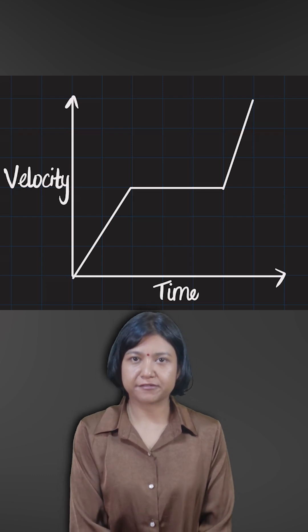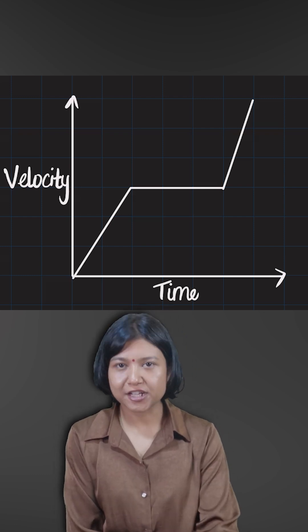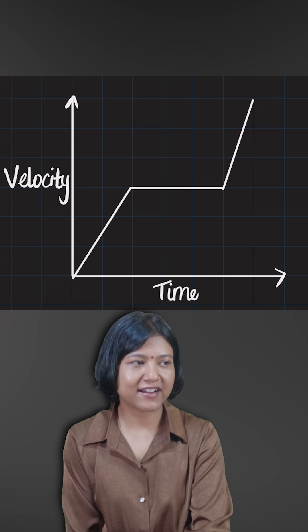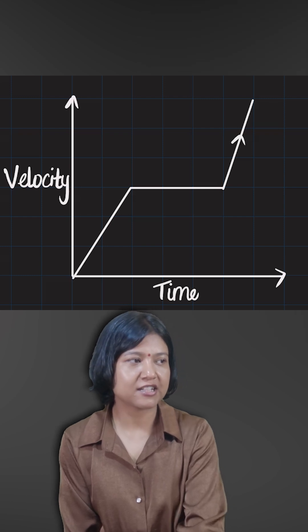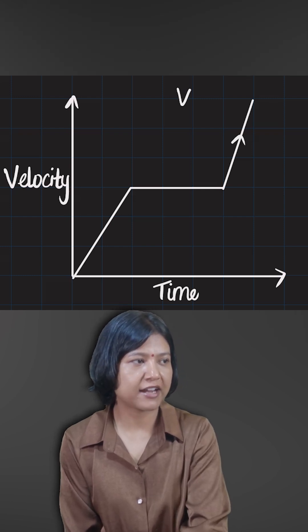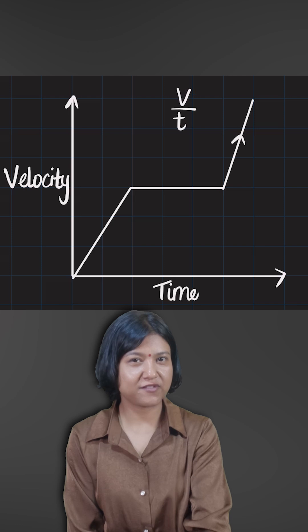If you ever have a velocity-time graph to find the acceleration, what do you do? You always find the gradient, because gradient is rise over run. So when you find velocity upon time, change in velocity divided by change in time, that gives you your acceleration.